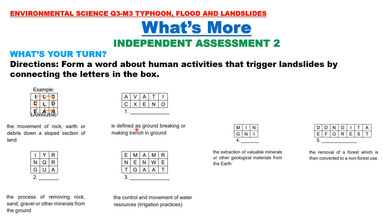Number one is defined as ground-breaking or making a trench in the ground. Two is the process of removing rock, sand, gravel, or other minerals from the ground. Three is the control and movement of water resources. Four is the extraction of valuable minerals or other geological materials from the earth. Five is the removal of a forest which is then converted to a non-forest use.